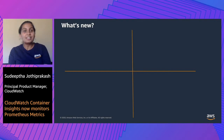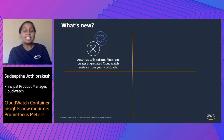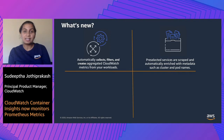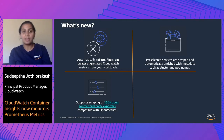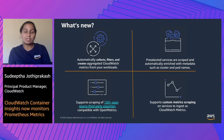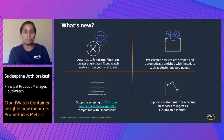So what's new? This new release automatically collects, filters, and creates aggregated CloudWatch metrics from your workloads. You can now utilize pre-selected services that are scraped and automatically enriched with metadata, such as cluster and pod names. This support scraping is also available for 150-plus open-source third-party exporters compatible with OpenMetrics. We also support custom metrics scraping on services to ingest as CloudWatch metrics. For example, if you want to collect any application metrics from your namespaces, you can do so today.